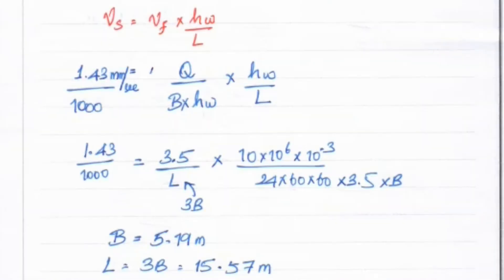Now we use the formula: settling velocity Vs = Vf × Hw/L. We just found Vs = 1.43 mm per second, which converts to 1.43/1000 meters per second.